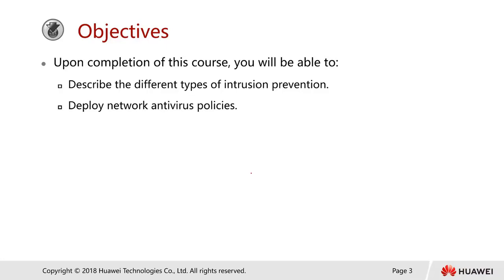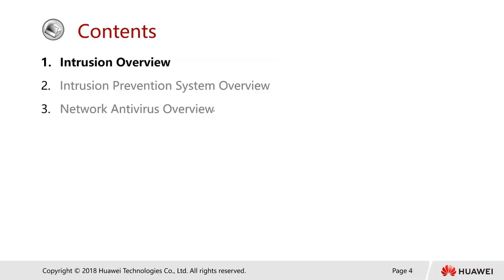Upon completion of this course, we should be able to describe the different types of intrusion prevention and understand network antivirus policy, as well as deploy the policy. We break this into three topics: intrusion overview, intrusion prevention system (IPS) overview, and network antivirus overview.